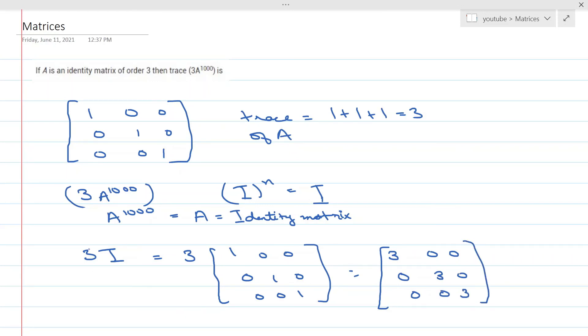And the trace of this matrix, which is nothing but 3 times A to the power 1000, is going to be 3 plus 3 plus 3, which is equal to 9. So this is my final answer. The trace of 3 into A power 1000 is equal to 9.